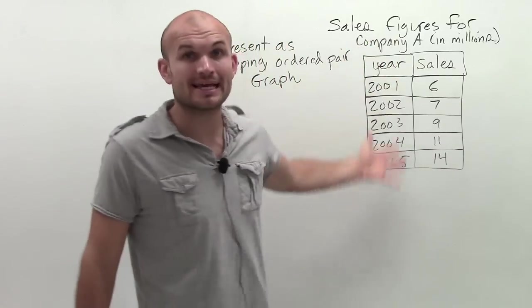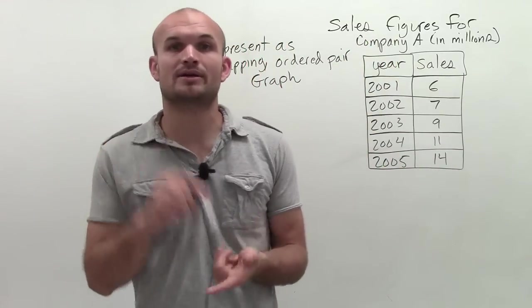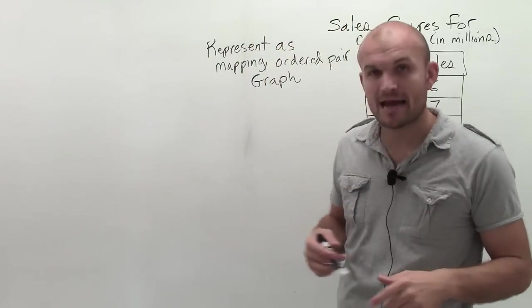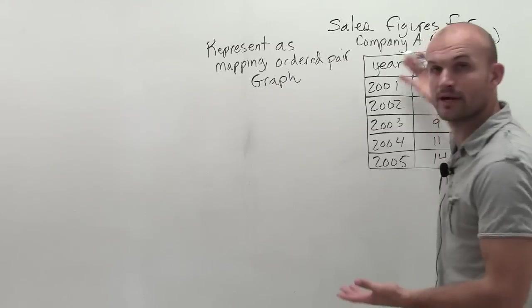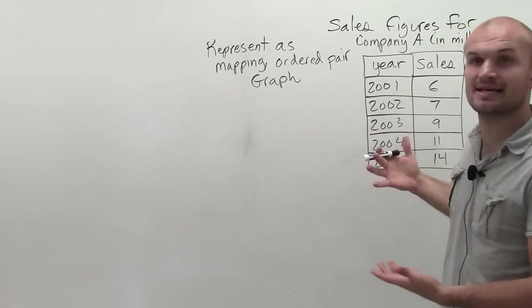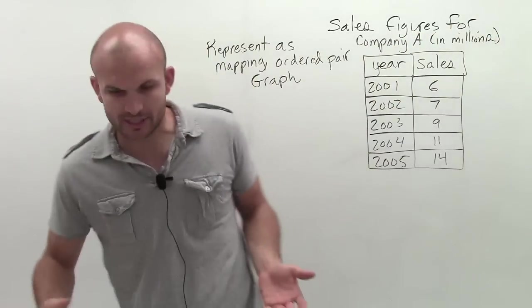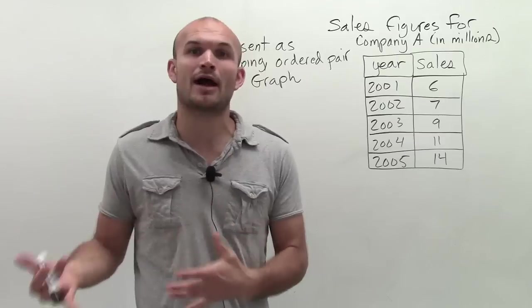We have a table, which actually they gave us, and then we can also represent it as ordered pairs, we can represent it as a graph, and also we can represent it as mapping. So I'm going to show you, if given one way to represent a relation, how to represent it in all the other facets. Remember a relation is a correspondence between your input and your output values.